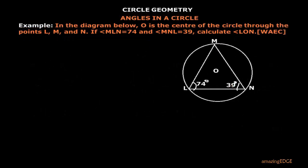Now let's look at this example. In the diagram below, O is the center of the circle through points L, M, and N. If angle MNL is 74 degrees and angle NLM is 39 degrees as shown in the diagram, we are asked to calculate angle LON — that is, the angle formed at the center of the circle.